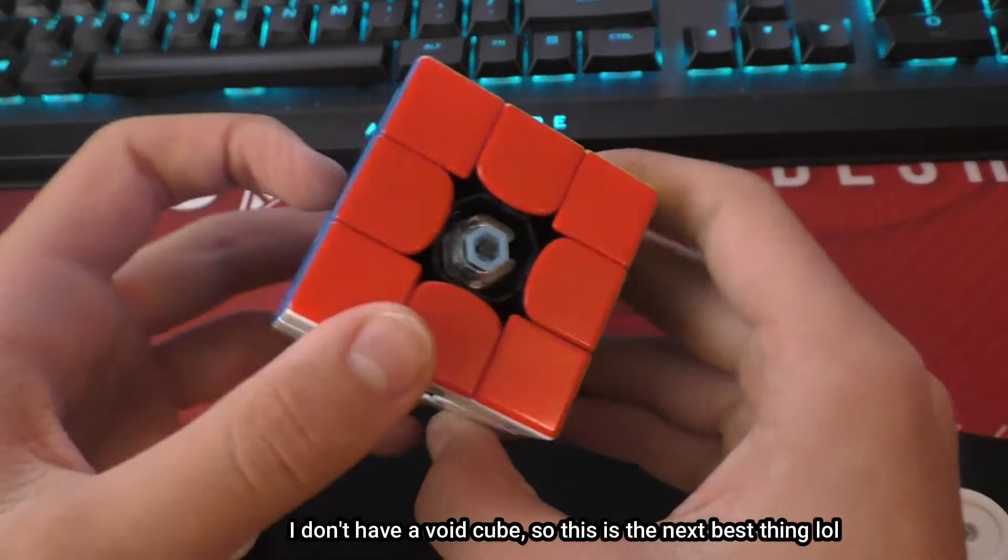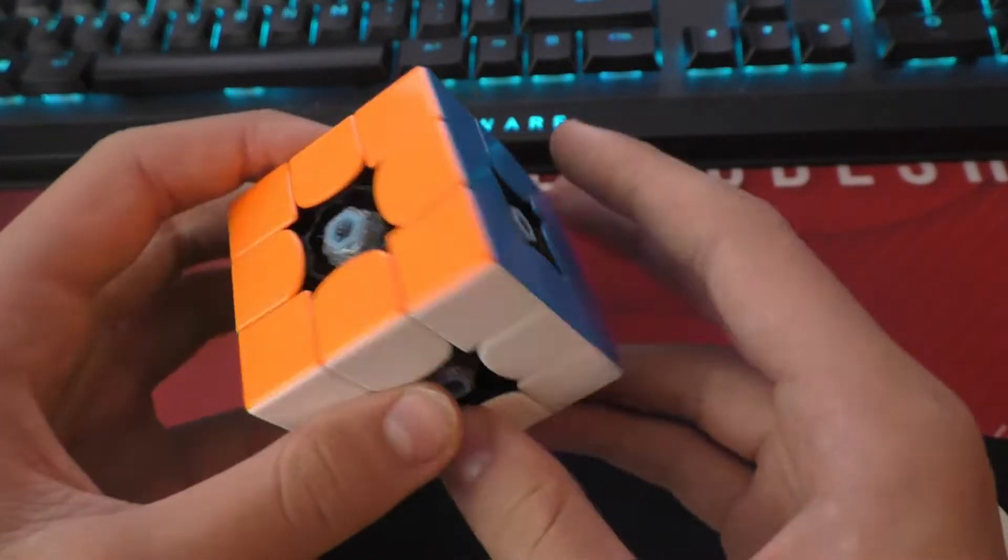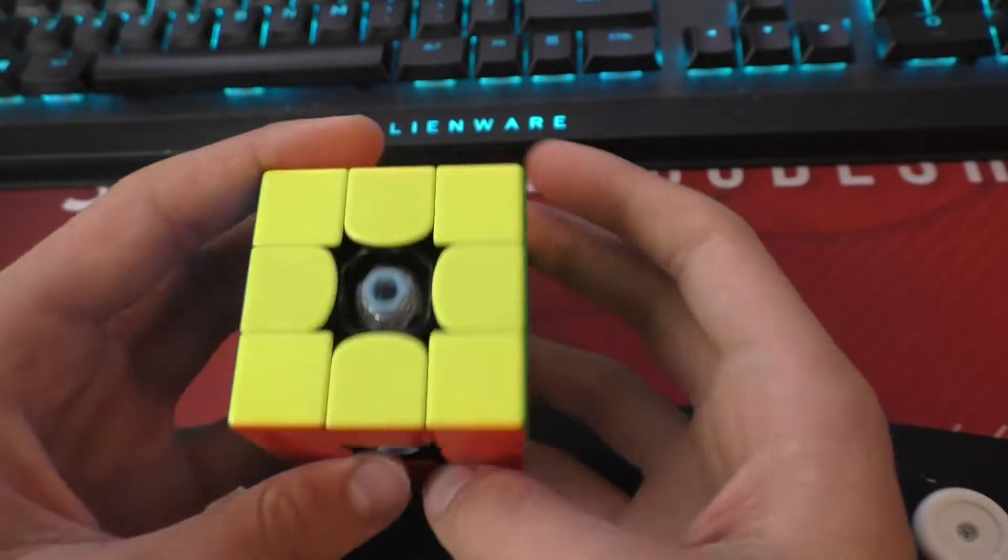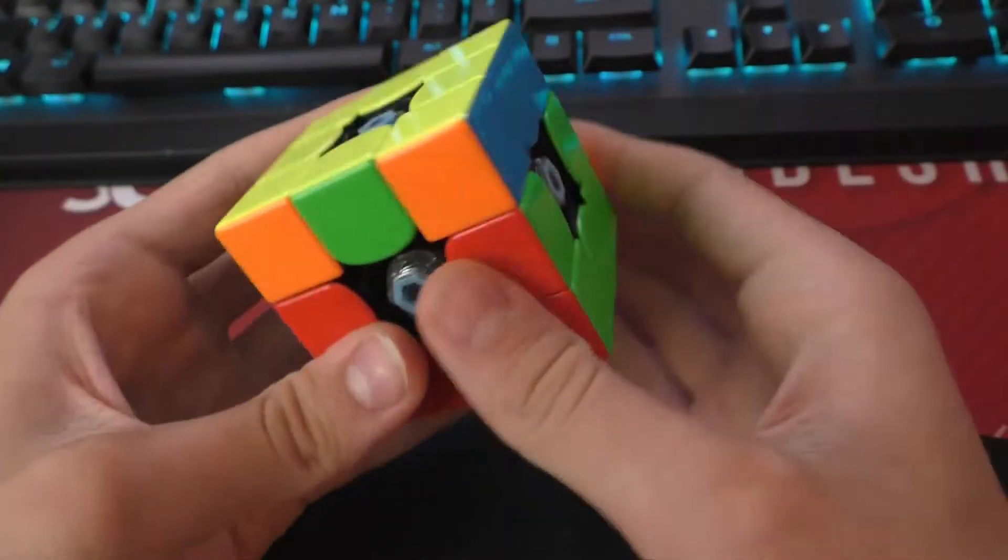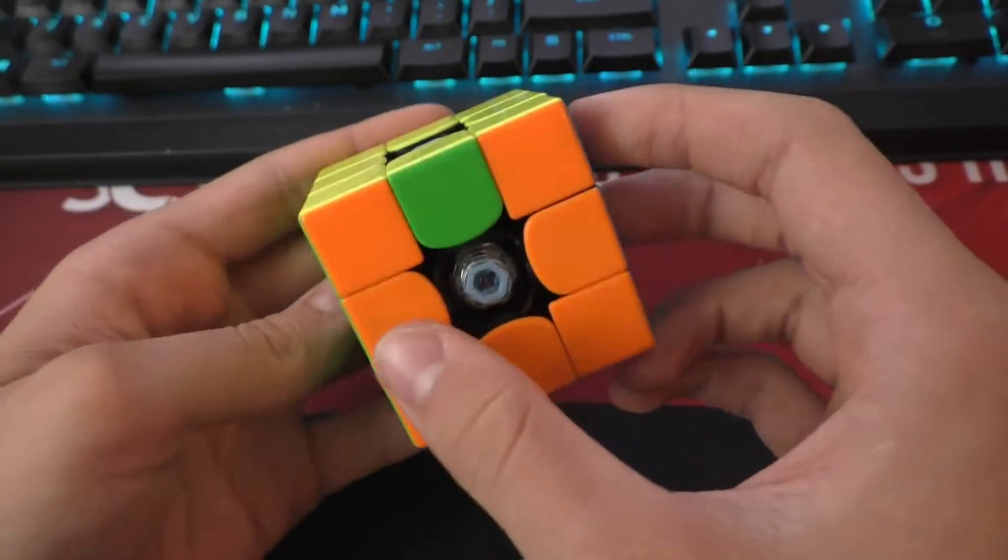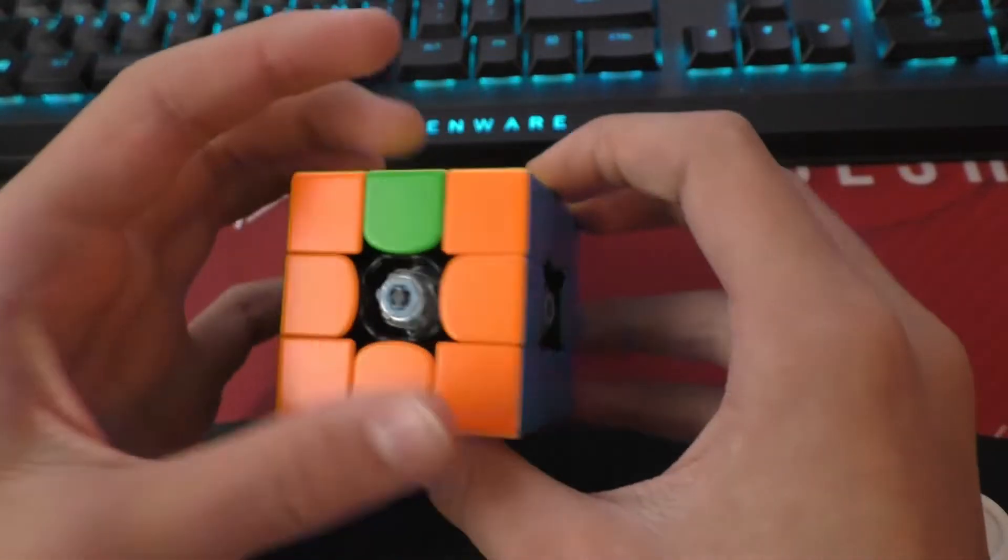If you did not know already, the void cube has parity. Right now I have a solved void cube, and I'm going to do a parity algorithm on it. There we go. Now I have parity on my void cube.